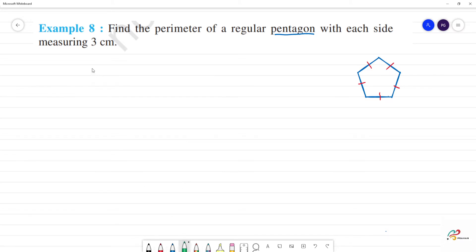Perimeter for regular pentagon. The total number of sides is 5. So, 5 into L, where L is the side length, total number of sides is 5 into L.